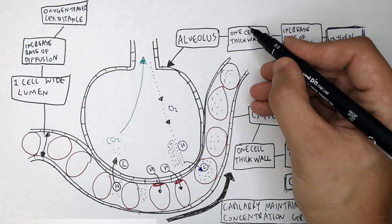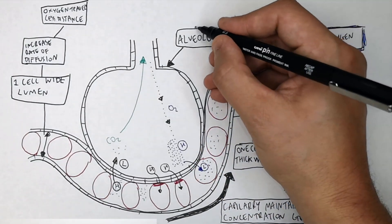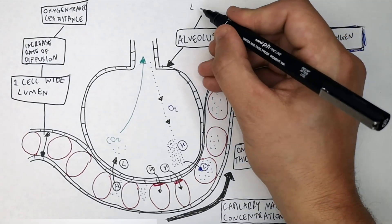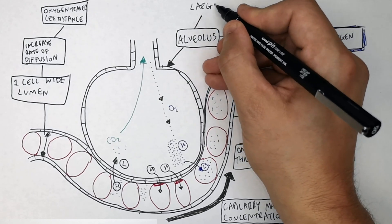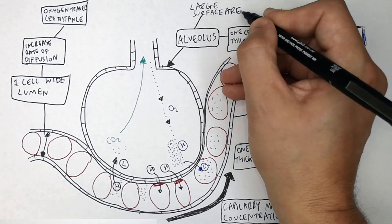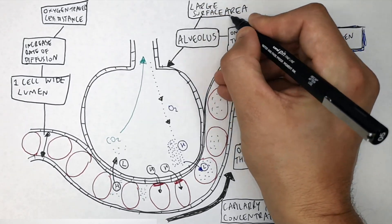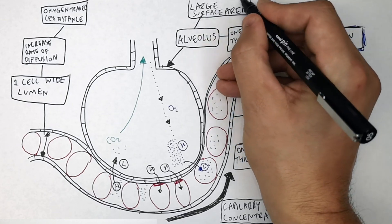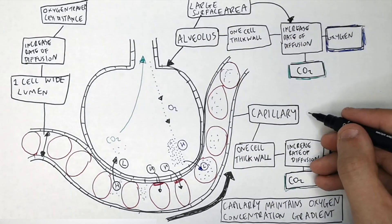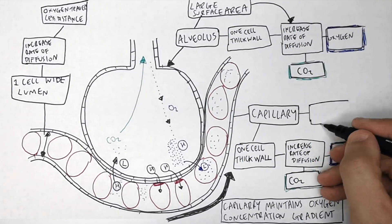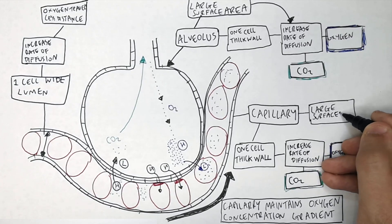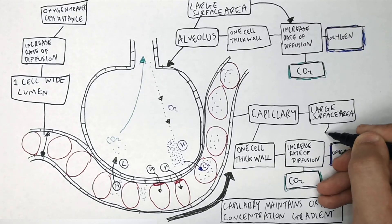The last adaptation we're going to talk about is that the alveolus — the alveoli and the capillaries — both have a large surface area. This is to increase the rate of diffusion of oxygen and CO2, so it's got a large surface area to increase the rate of diffusion of CO2 and oxygen.